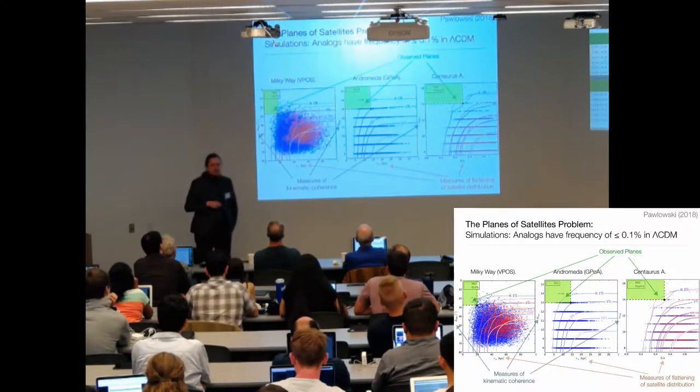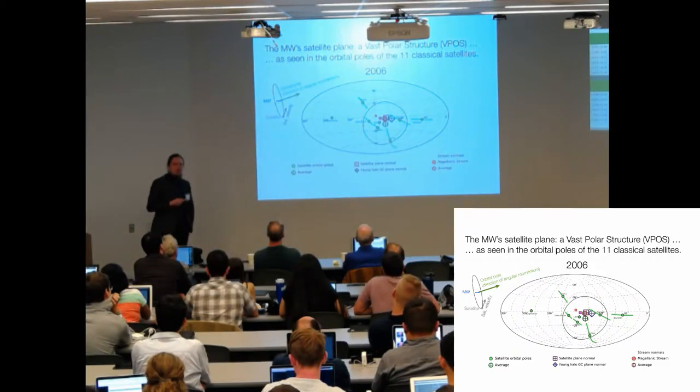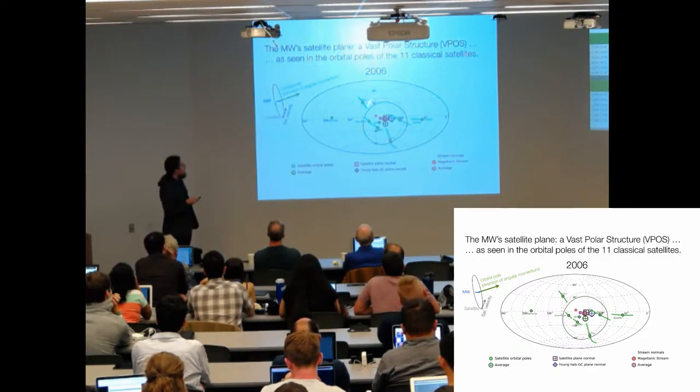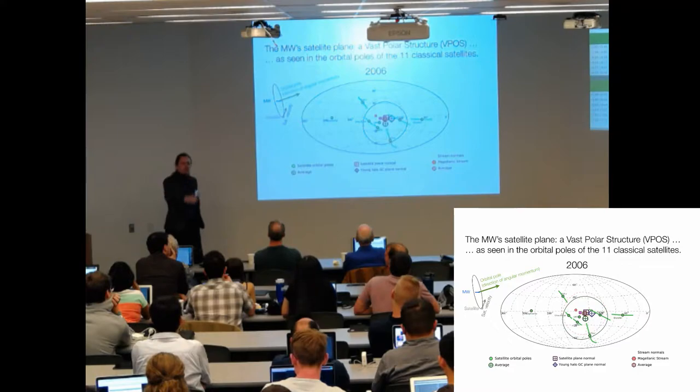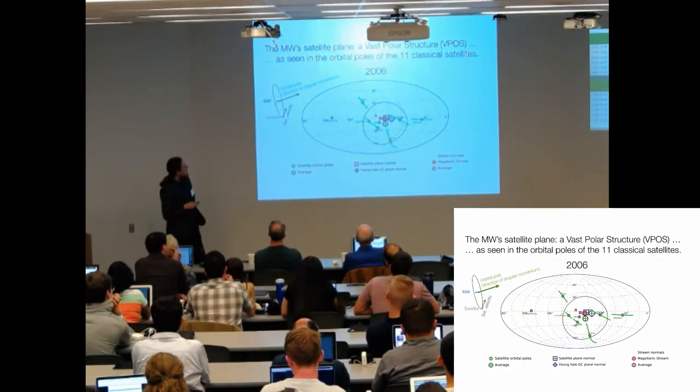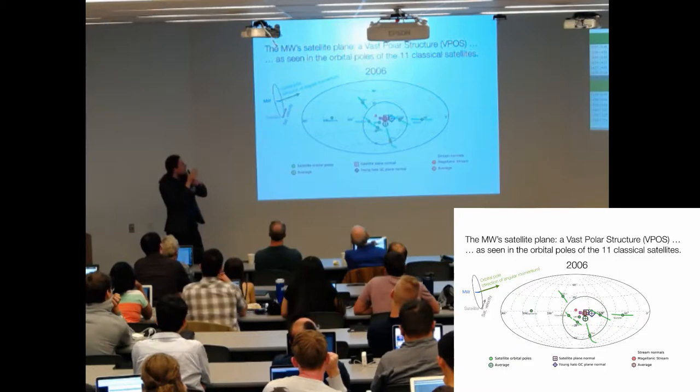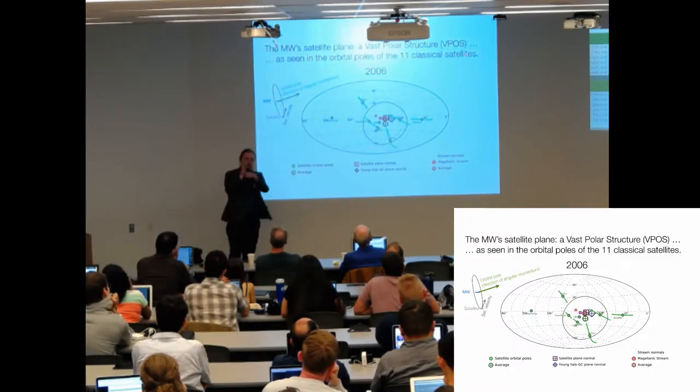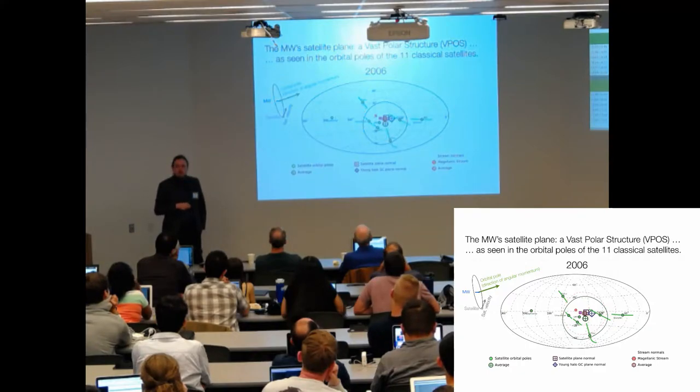We will now focus on the Milky Way system and look at the orbital poles of satellite galaxies. Orbital poles are the directions of angular momentum - if you have a Milky Way here with a satellite orbiting around it, this direction is the orbital pole. That's what's plotted in those green points in an all-sky plot. This is the situation 12 years ago - these symbols give us the directions of normal vectors of planes fitted to the satellite distribution. It looked kind of promising but there were a lot of uncertainties and scatter.